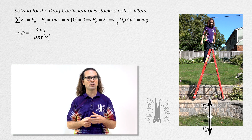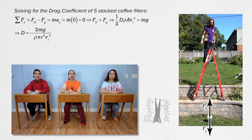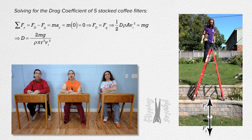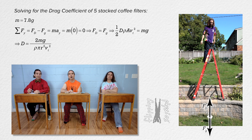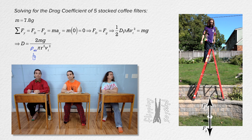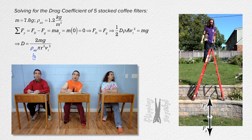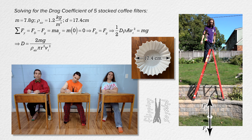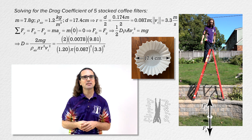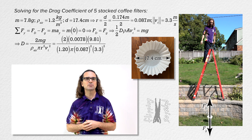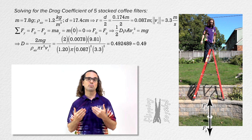The variables needed are: the mass of the five coffee filters — 7.8 grams total; the density of air — roughly 1.2 kilograms per meter cubed; the radius of the coffee filters — diameter is 17.4 centimeters, so radius is 0.087 meters; and the terminal speed of 3.3 meters per second. Plugging these in, the drag coefficient of the five stacked coffee filters equals 0.49.